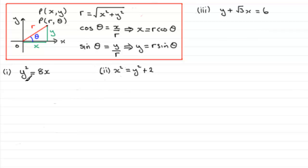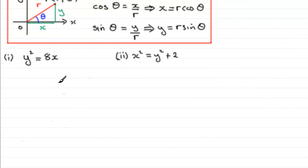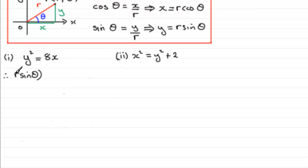Let's demonstrate this with example one, where we've got y squared equals 8x. In place of y, we write it as r sine theta. So therefore, what we've got is r sine theta, all squared, equal to 8 times x, and x is r cos theta. So we can write that in as 8r cos theta.